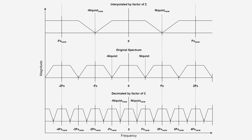Sampling rate conversion is the process of modifying the available bandwidth of a signal. It comes in two flavors, decimation and interpolation, where decimation reduces the bandwidth of the input signal and interpolation expands it. This technique has numerous applications, but the main reason to use it is to reduce the computational load of the signal chain.